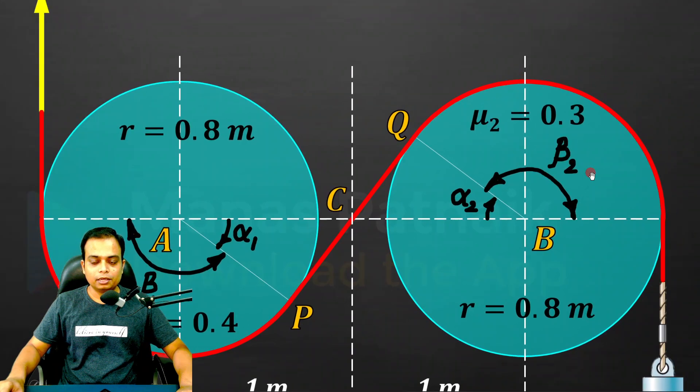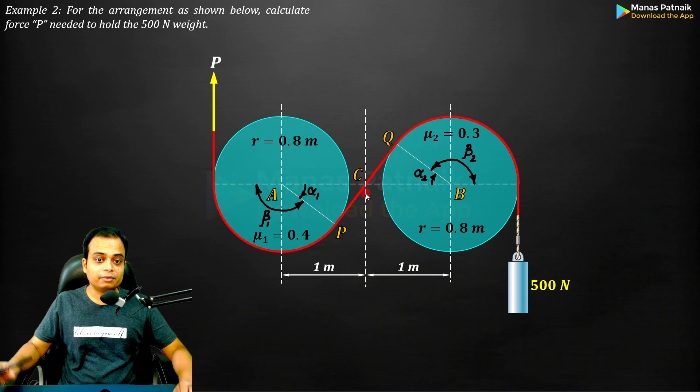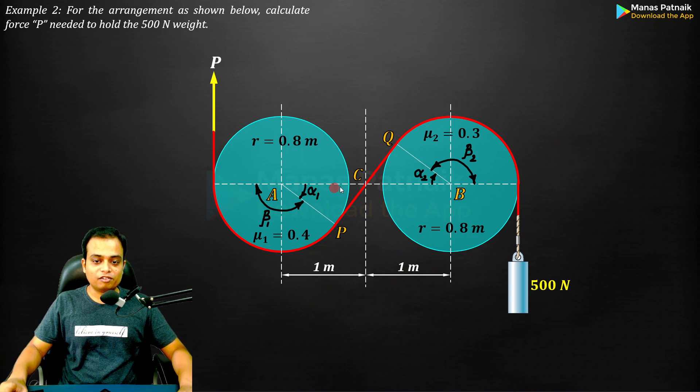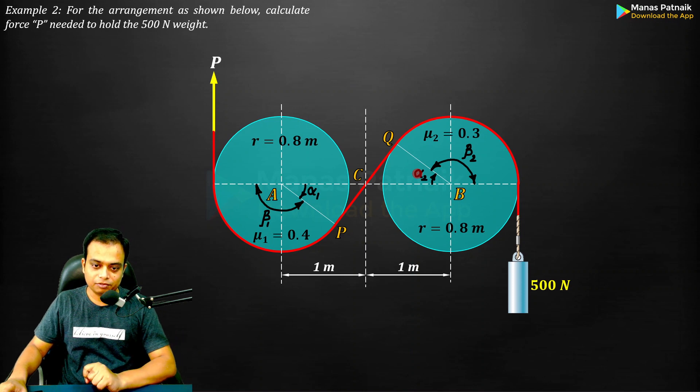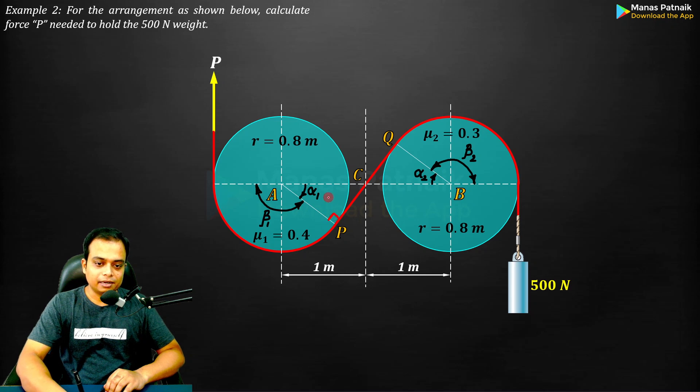Since both cylinders have the same dimensions - when I say dimension I mean the radius - beta 1, beta 2, alpha 1, and alpha 2 for both of them are going to be exactly the same. If you watch carefully, this is a 90 degree angle.